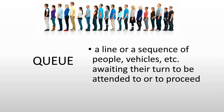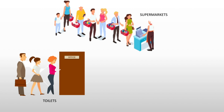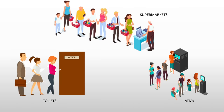A queue is a line or a sequence of people, vehicles, or any other things awaiting their turn to be attended to or to proceed. I'm pretty sure at least once in your day, you are in a queue. So what are some examples of a queue? One good example would be lining up for your turn to the toilet, or lining up to pay in the supermarket, or lining up to check your balance at an automatic teller machine.